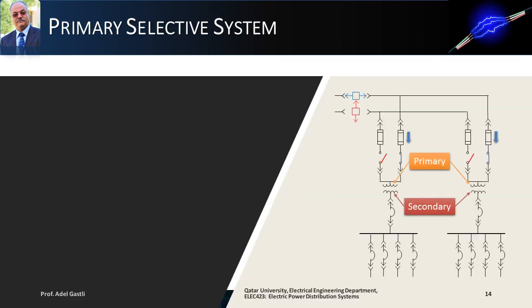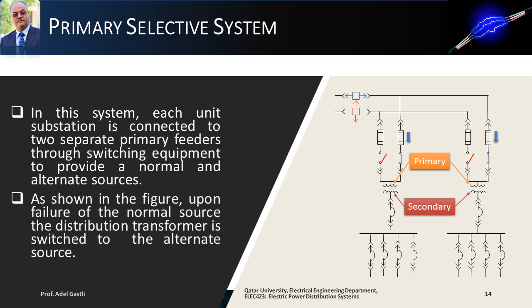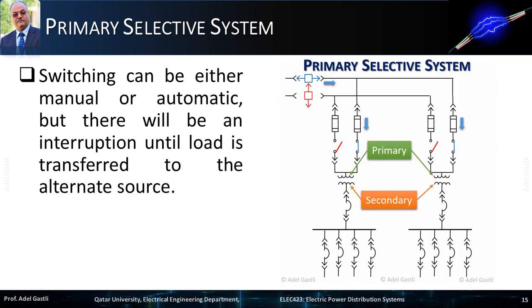A better configuration is the primary selective system. In this system, each unit substation is connected to two separate primary feeders through switching equipment, to provide a normal and alternate source. Upon failure of the normal source, the distribution transformer can be switched to the alternate source. Switching can be either manual or automatic, but there will be an interruption until the load is transferred to the alternate source.